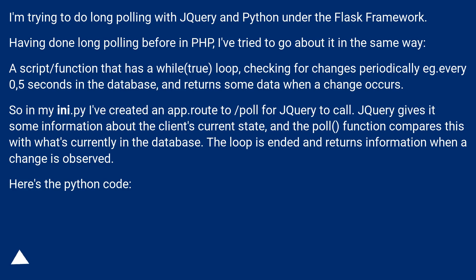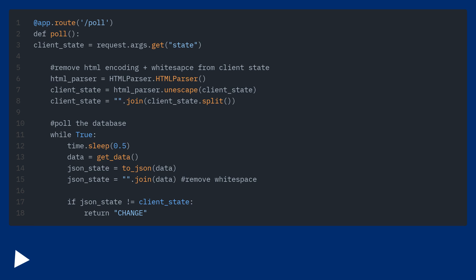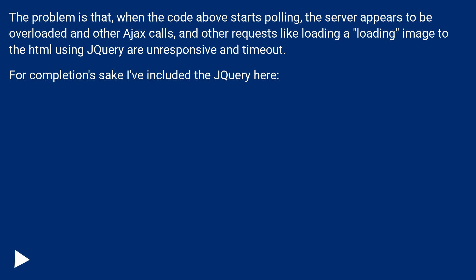Here's the Python code. The problem is that when the code above starts polling, the server appears to be overloaded, and other AJAX calls and requests — like loading images into the HTML using jQuery — are unresponsive and timeout.